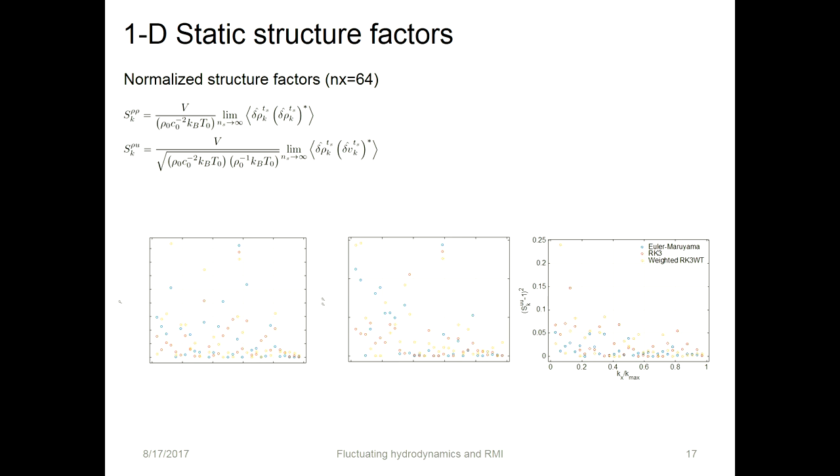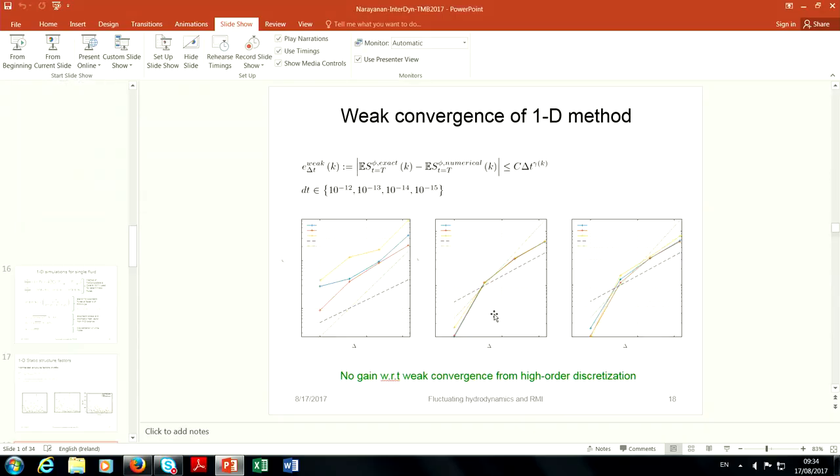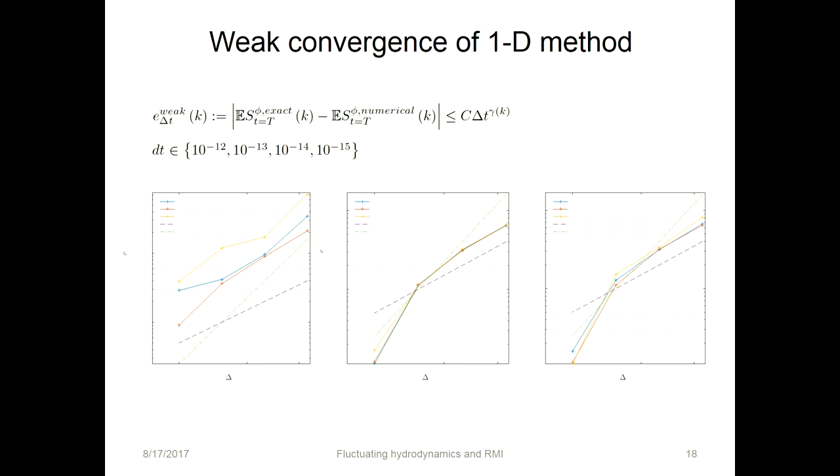We looked at weak convergence with respect to expected values of the structure factors. These are the first order and second order slopes, and we have for a few different delta t's, which are like one picosecond and so on, which are really small. What we found was that there was no gain with respect to weak convergence from the higher order method, which is sort of obvious because once you add stochasticity in, your order of accuracy is going to drop down.